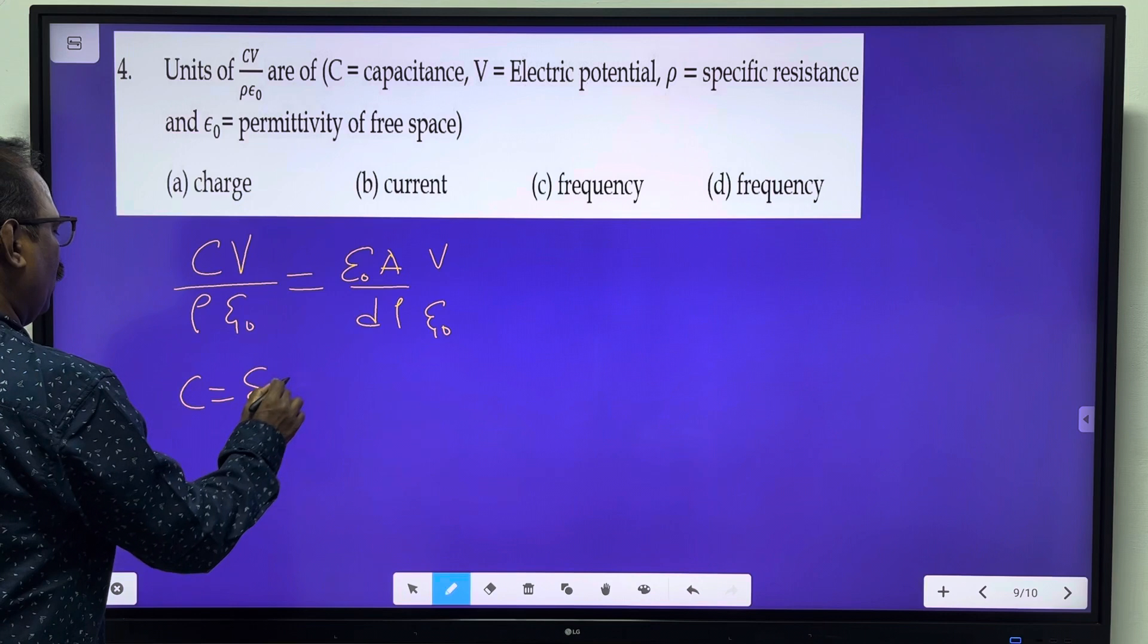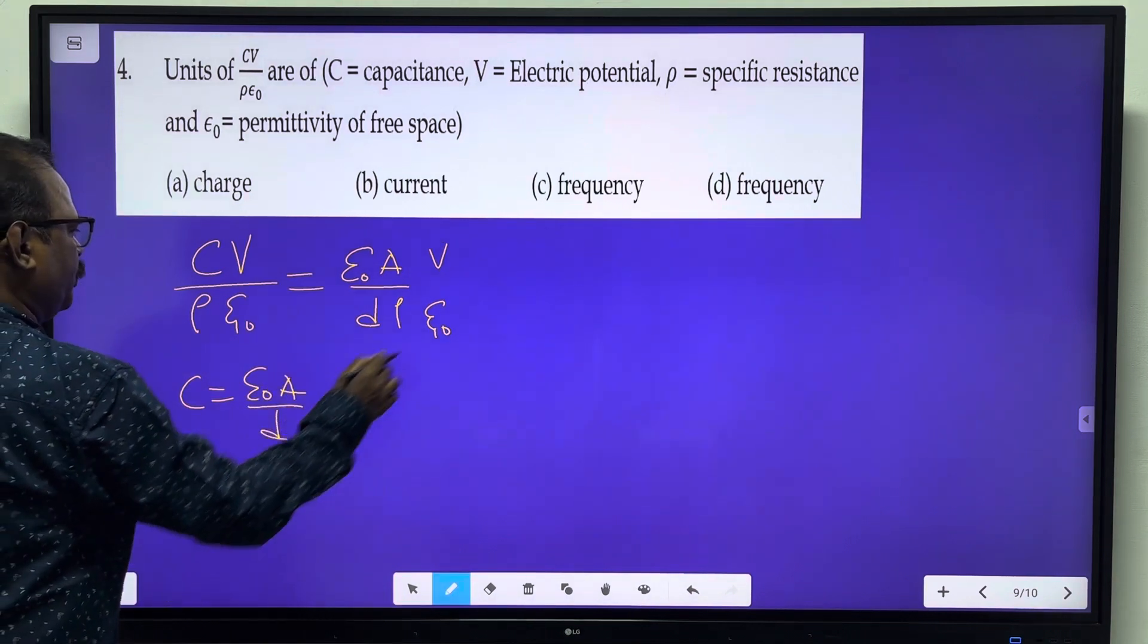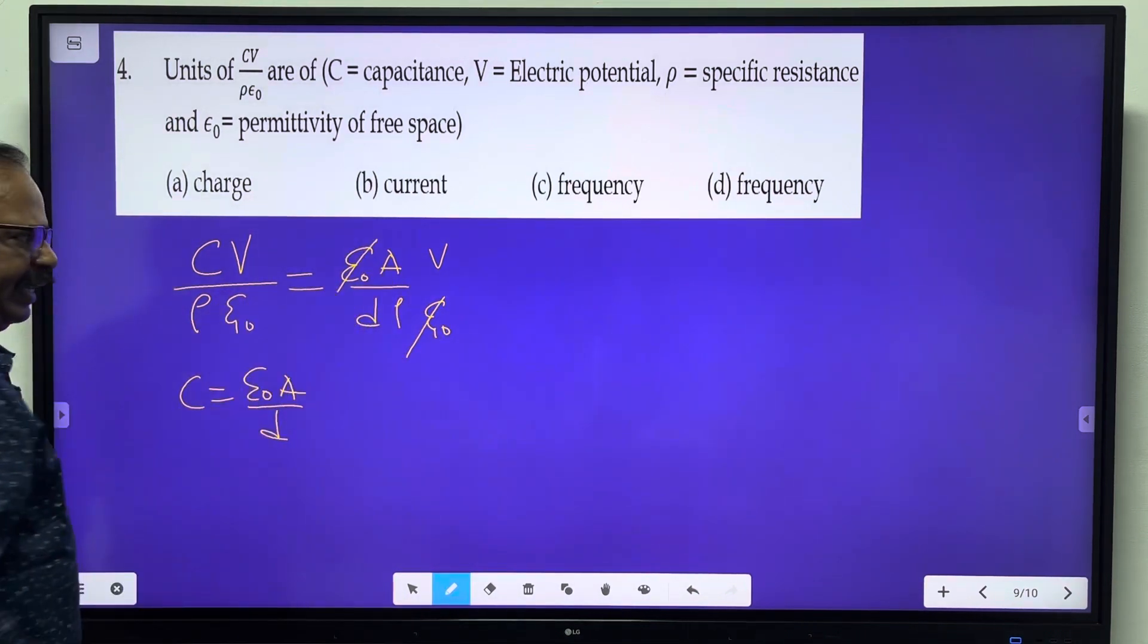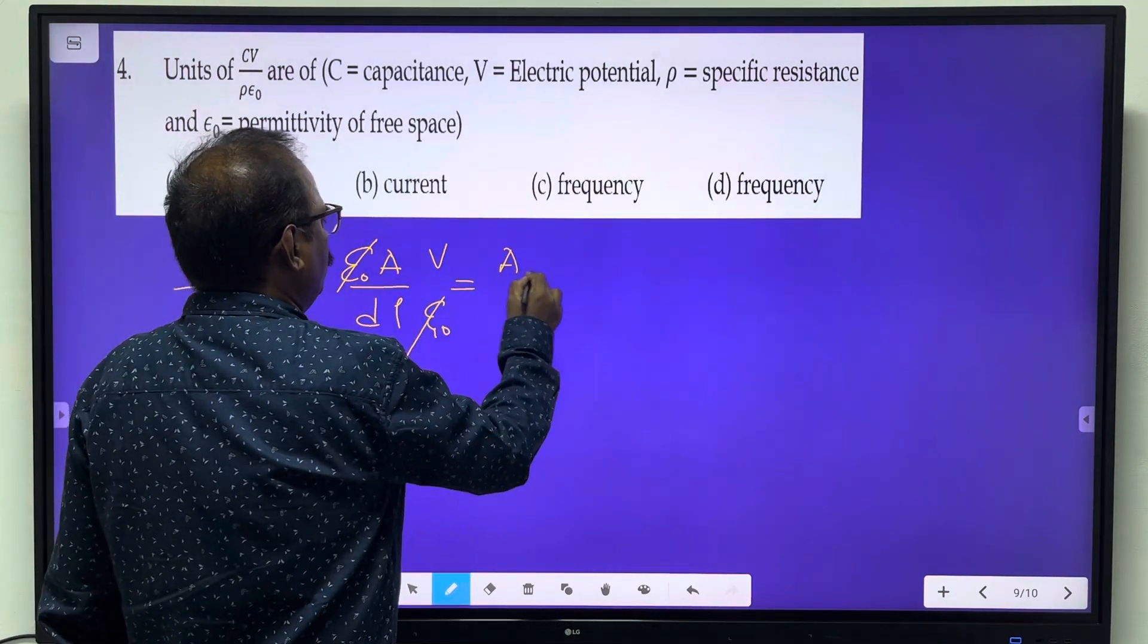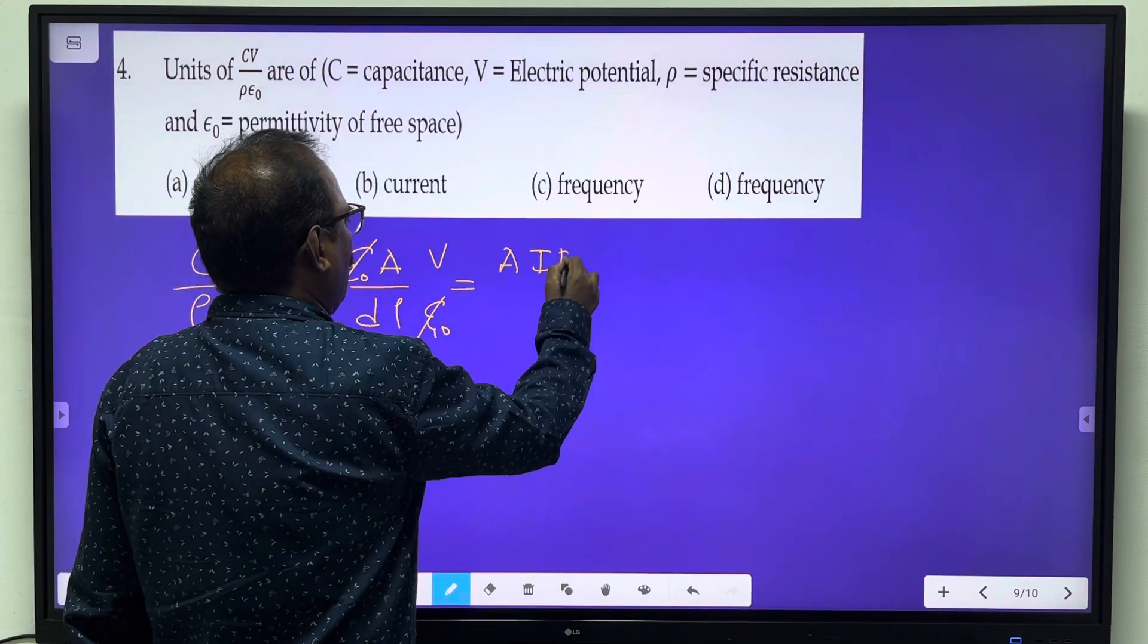Using C = ε₀A/d, epsilon naught cancels. Now Ohm's law: potential V equals I into R.